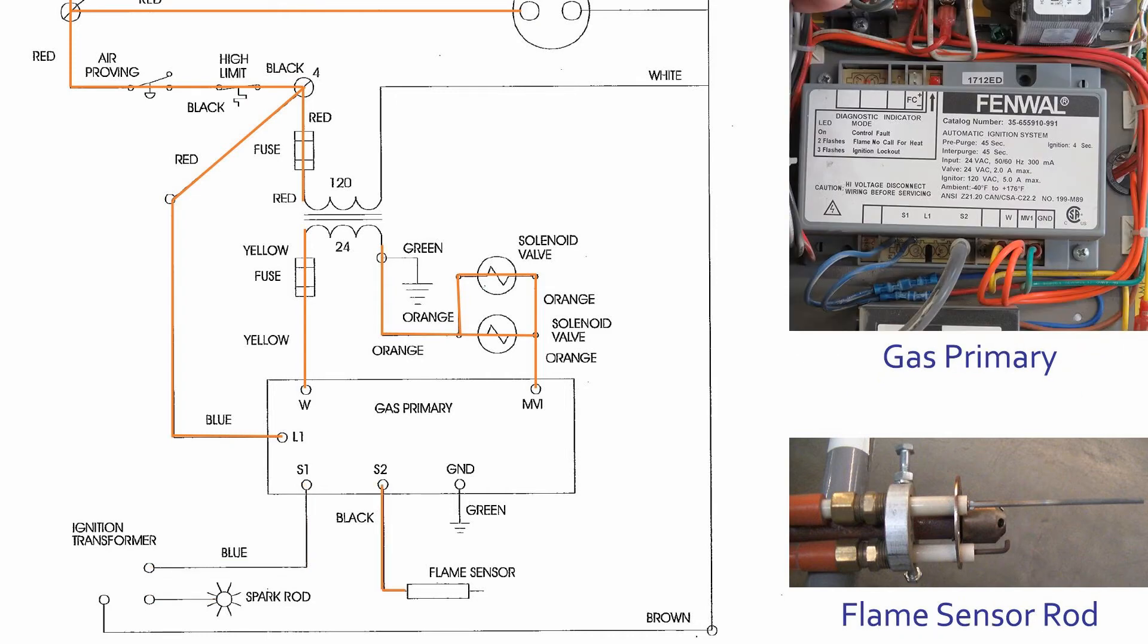The flame rod sensor constantly monitors the flame. If for some reason the burner flame is extinguished, the flame sensor will tell the primary control to stop the fuel flow.